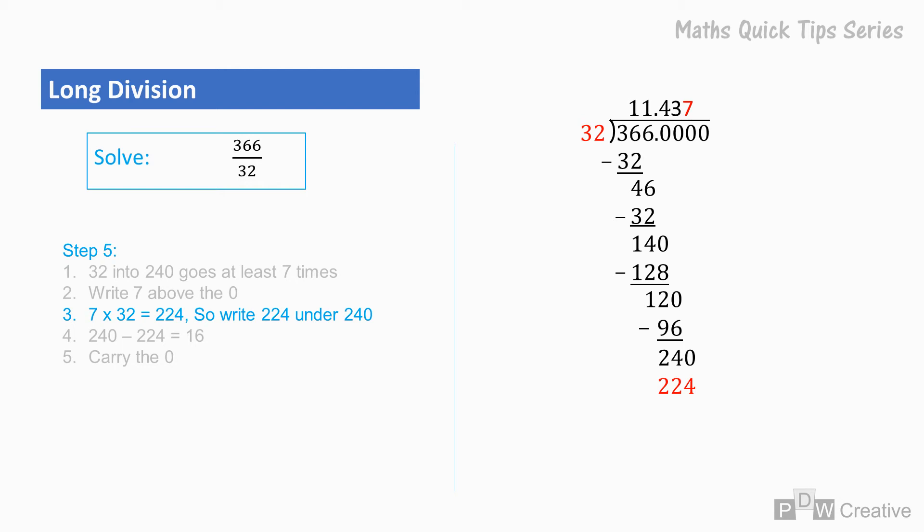So write 224 under 240. 240 minus 224 equals 16. Carry the 0.